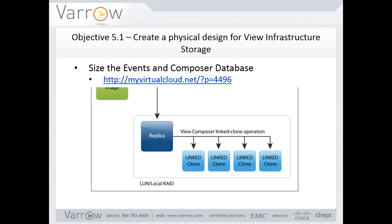The storage requirements for the server infrastructure: for vCenter, follow the best practices for whatever version you're using — there are KB articles for each version listing hardware requirements. For View connection and security servers, it's usually whatever you typically use for Windows. The connection, security, and composer servers don't take very much disk space. Whatever you typically size for Windows plus updates is fine — most environments that's around 40 gigs. The View documentation says 40 gigs required, 60 gigs recommended.